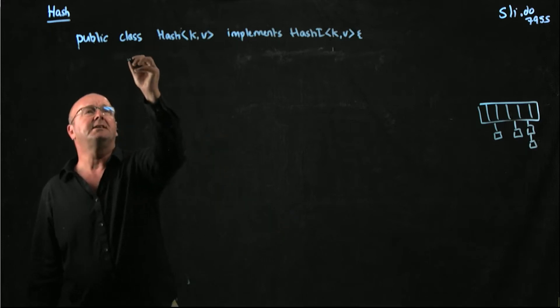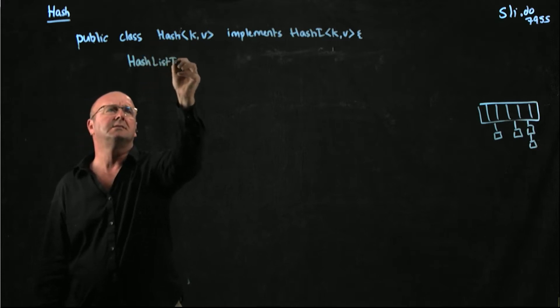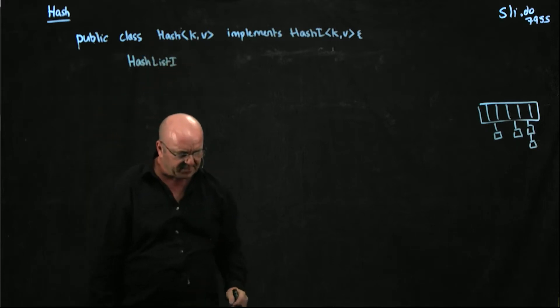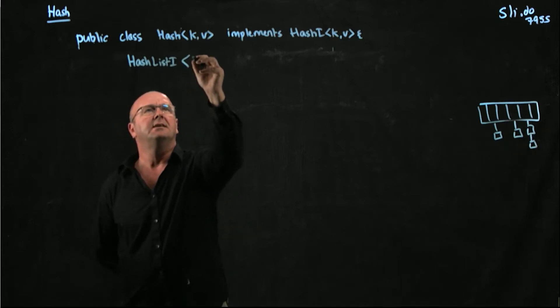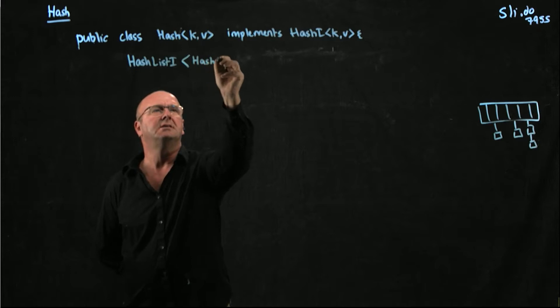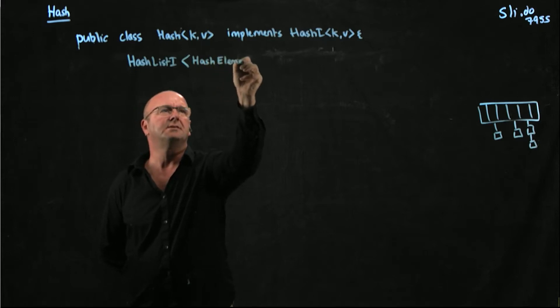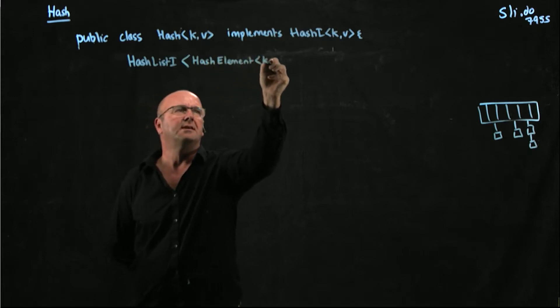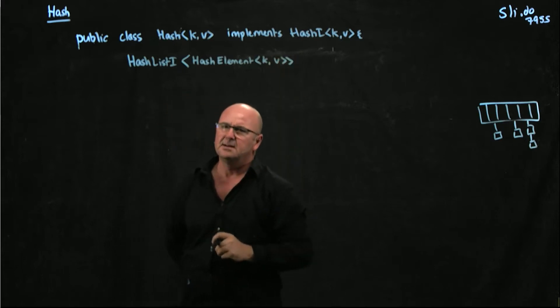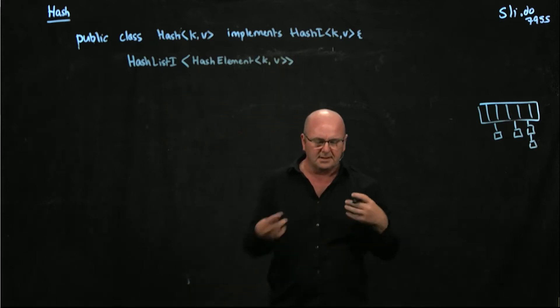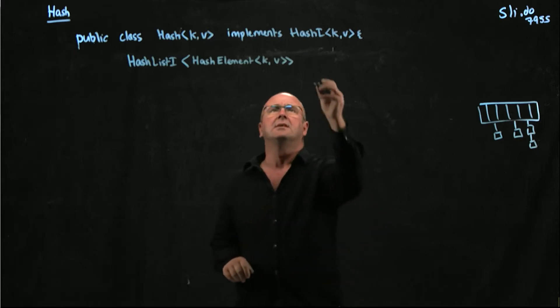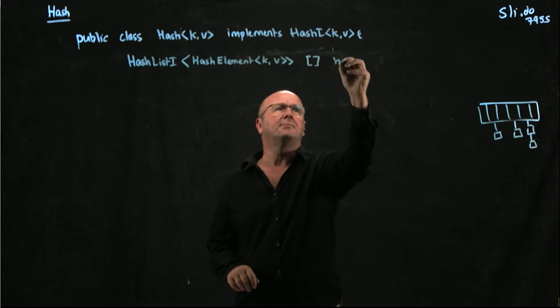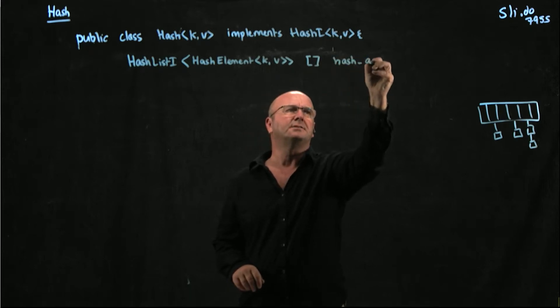The way that we're going to describe that is hash list i. And it's going to be array of linked lists. And our linked lists are going to take our hash element kv objects that are our simple little container objects that are containing things for our linked list. And so we're going to make an array of that. And we're going to just call it hash underscore array.